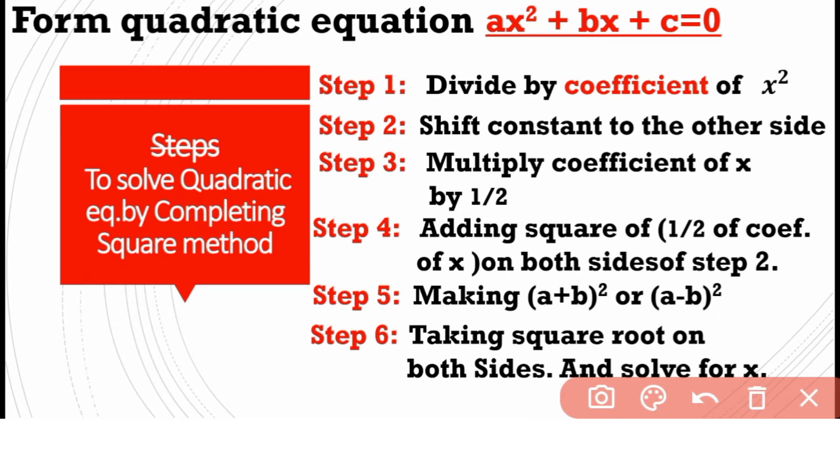Step 4 is adding square of half of coefficient of x. Half of coefficient of x is b/2, just as we now formed.